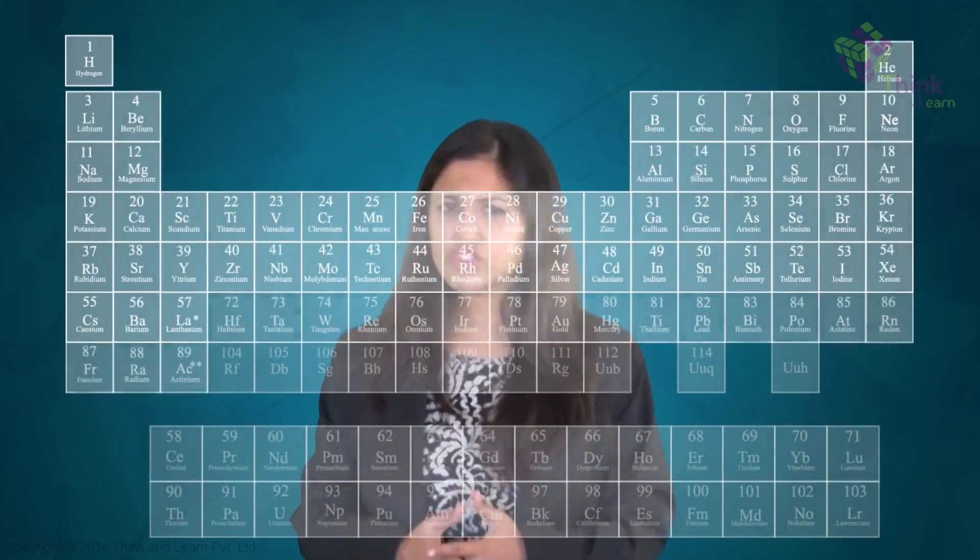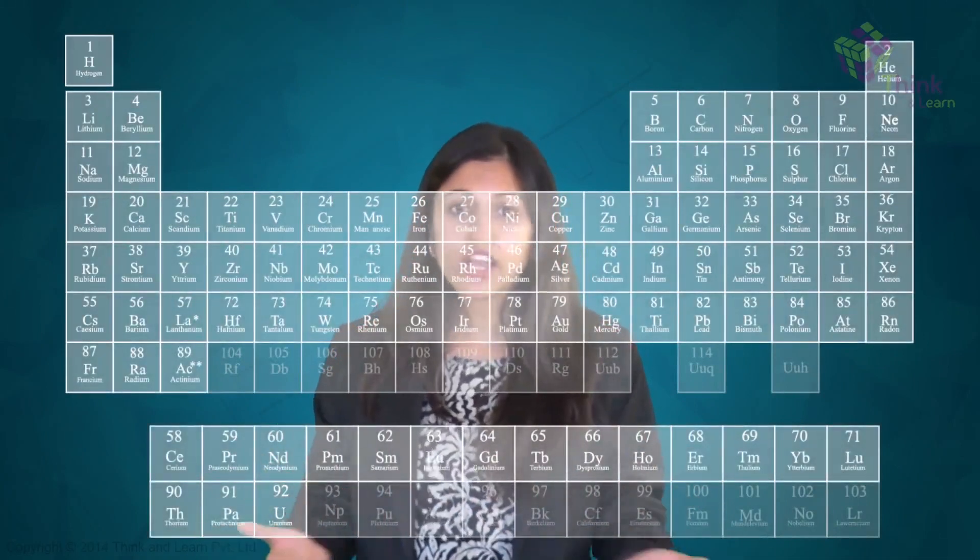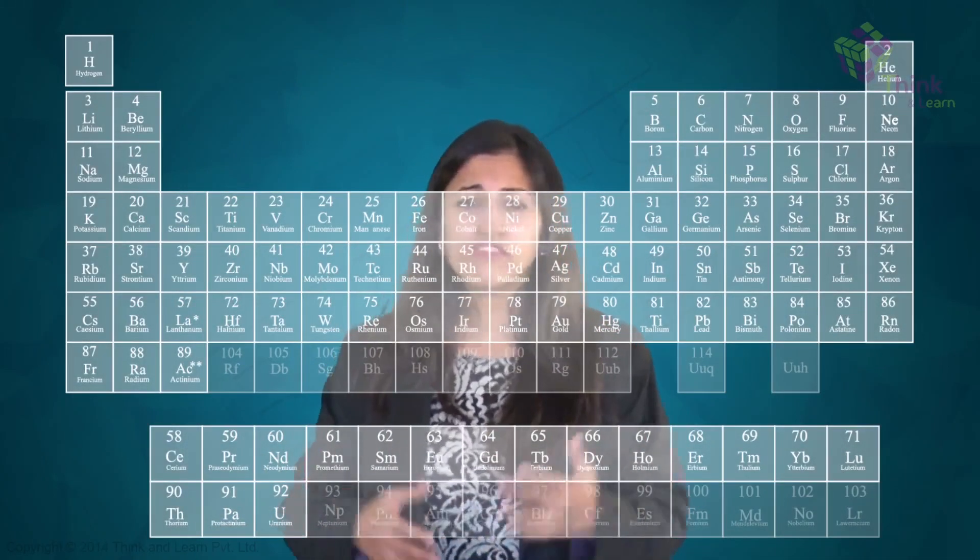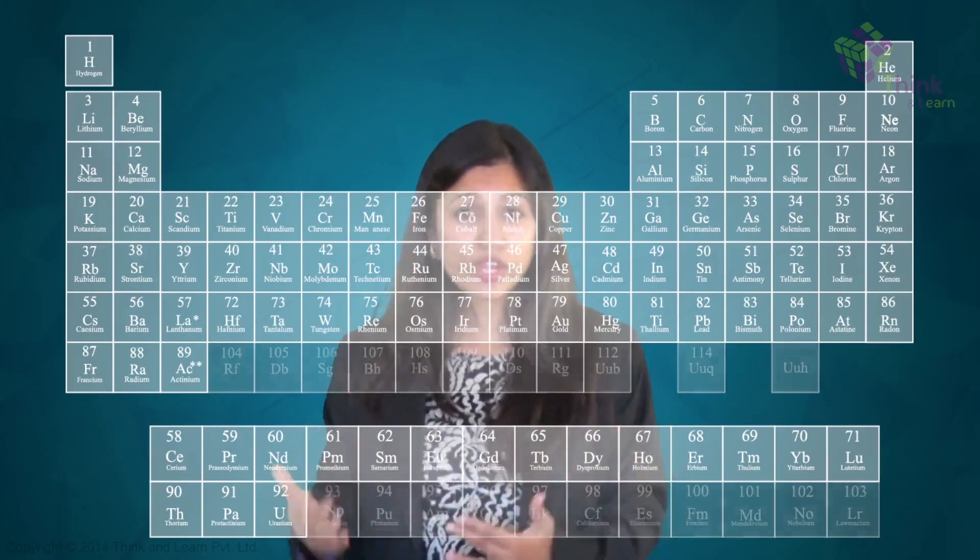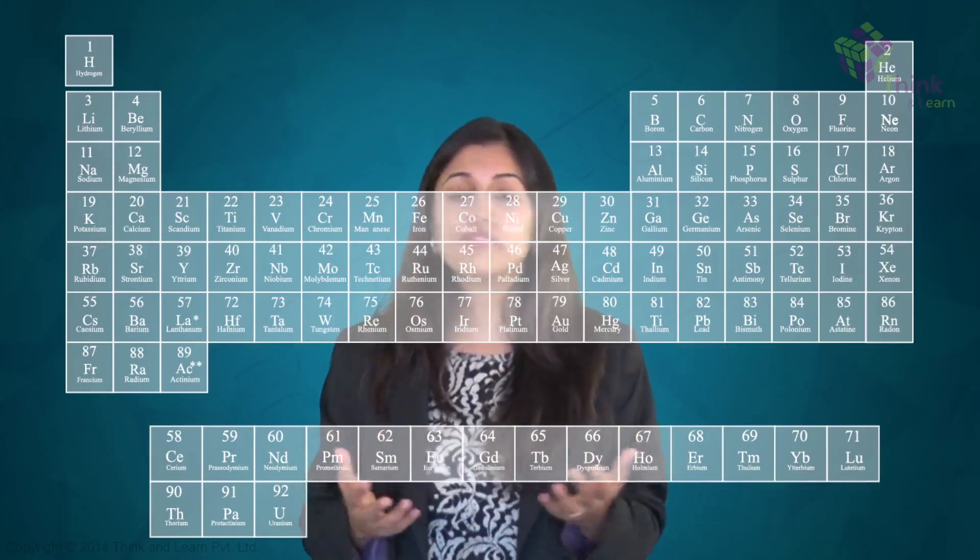It turns out that in nature, every element from one proton (hydrogen) to 92 protons (uranium) are naturally occurring. Although a few elements in this range are very scarce, the nuclei become large and unstable beyond uranium. They fall apart so quickly that we don't see them in nature.